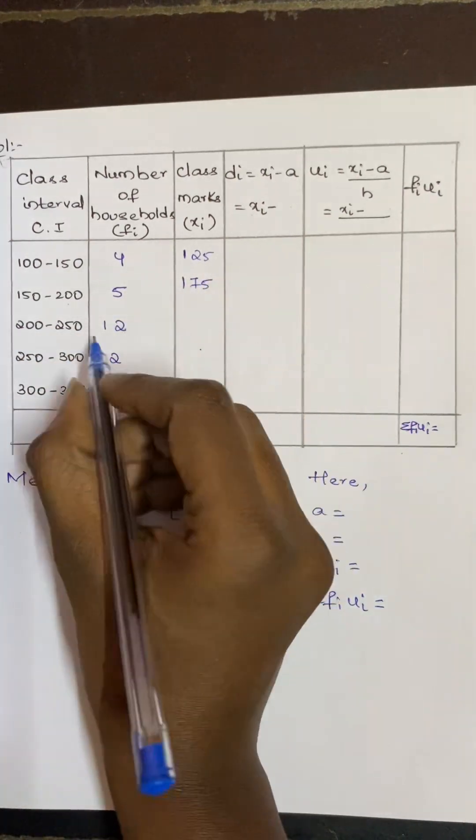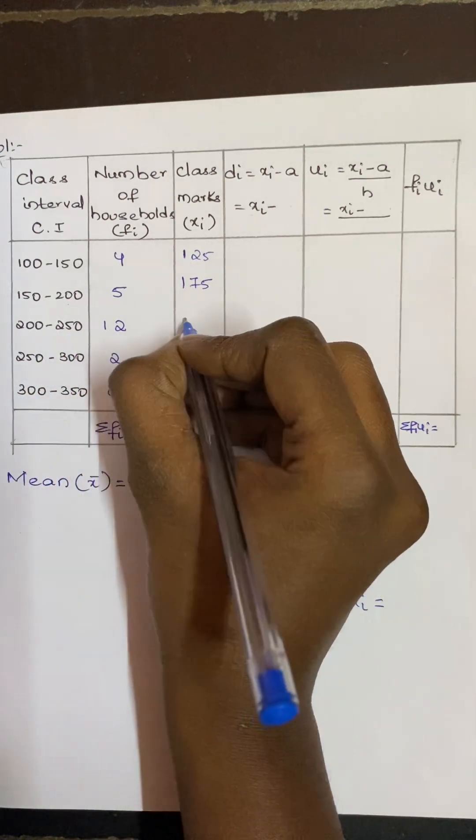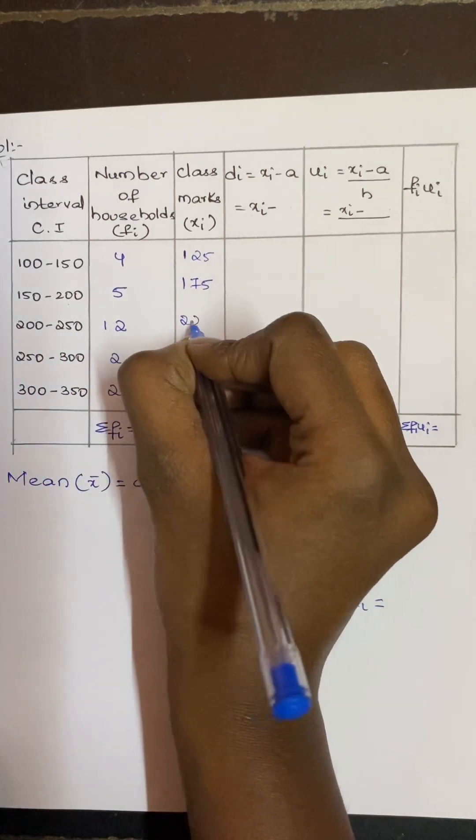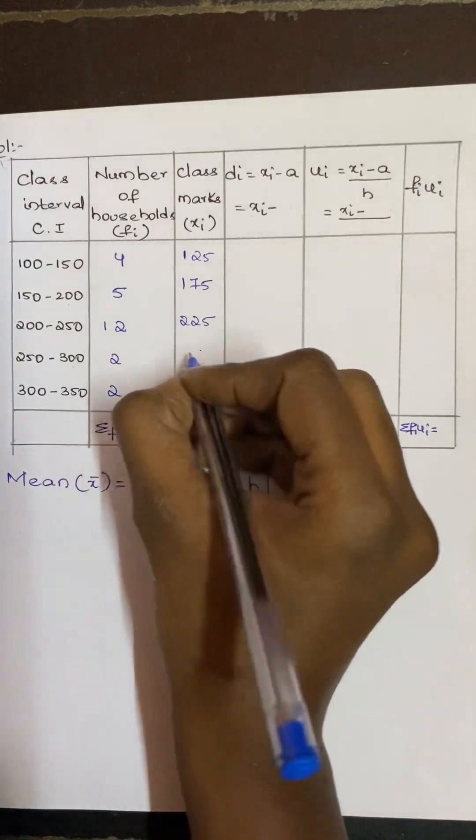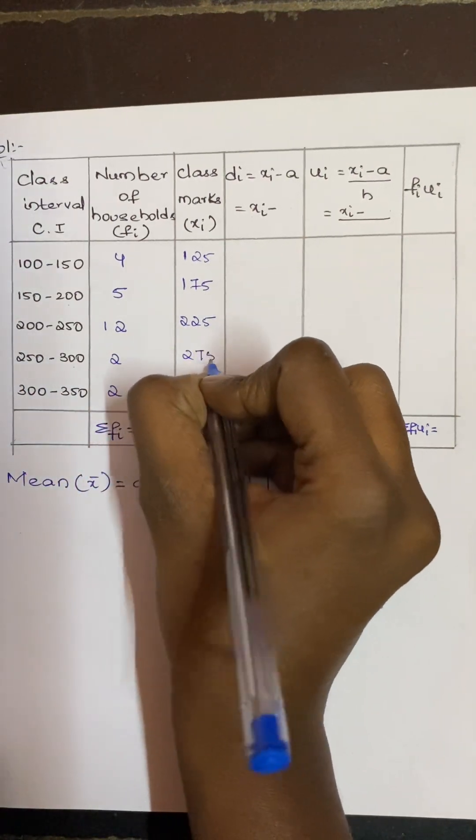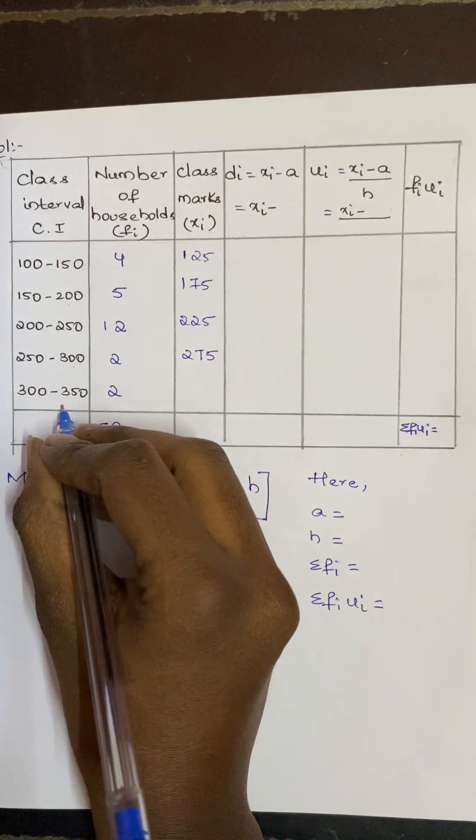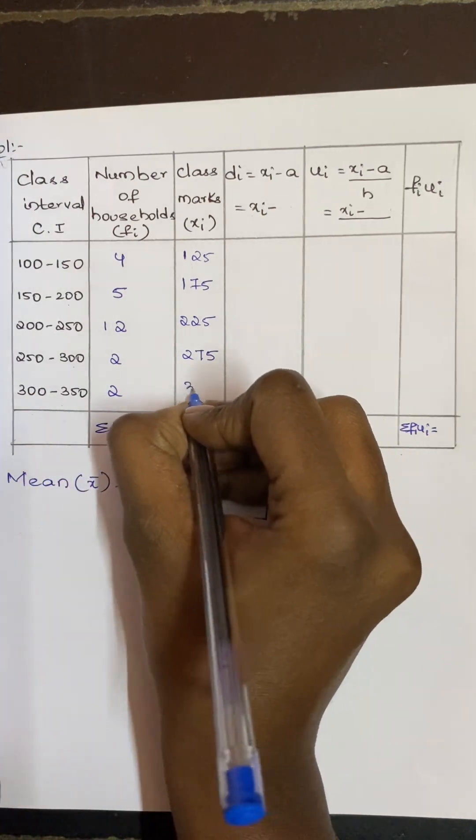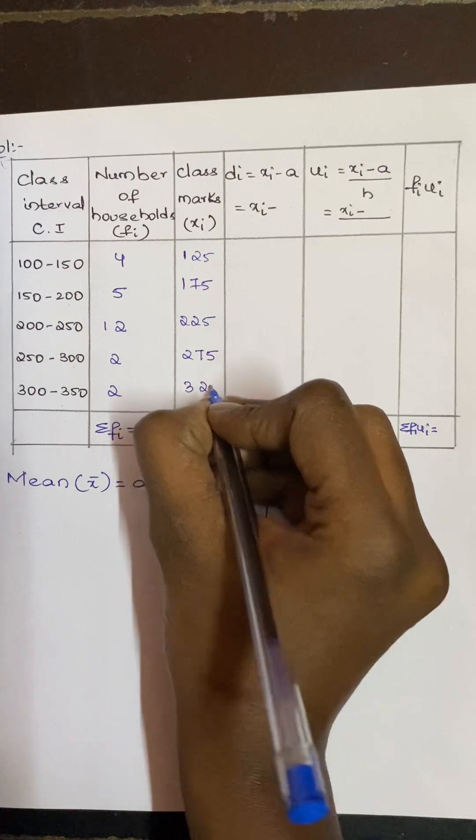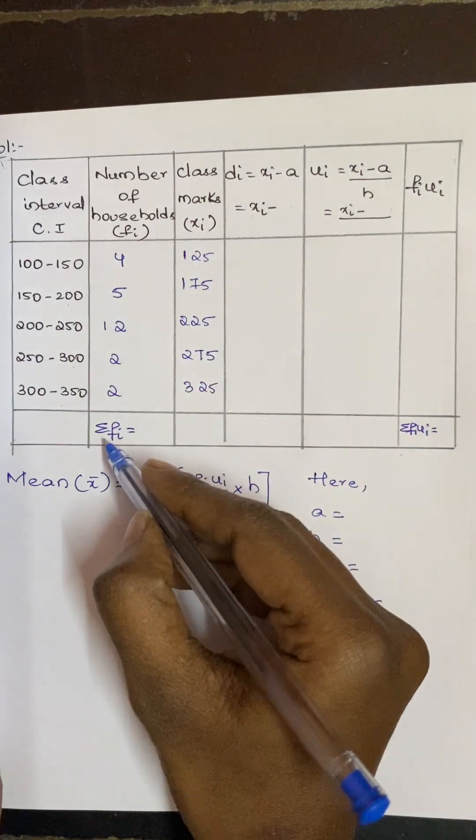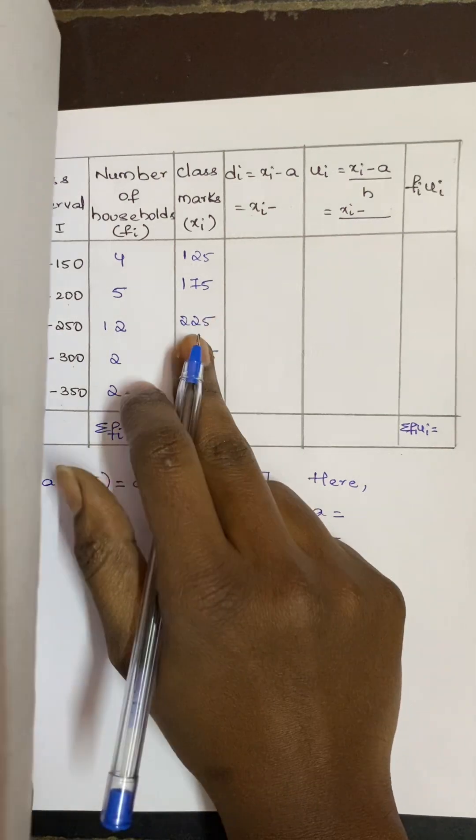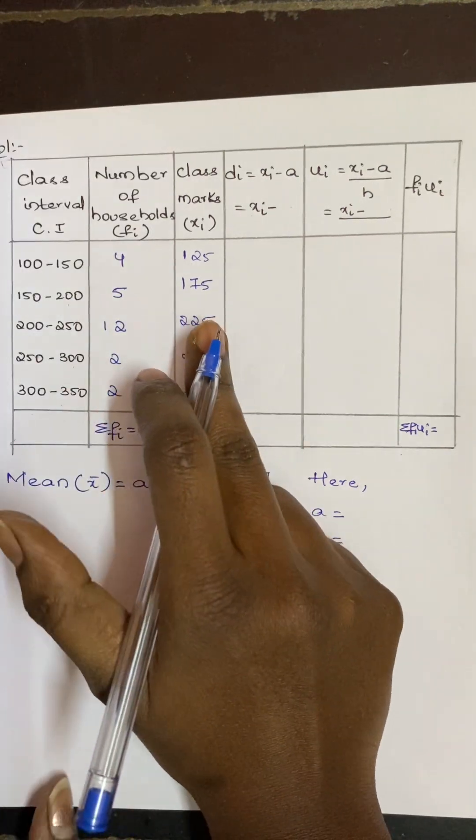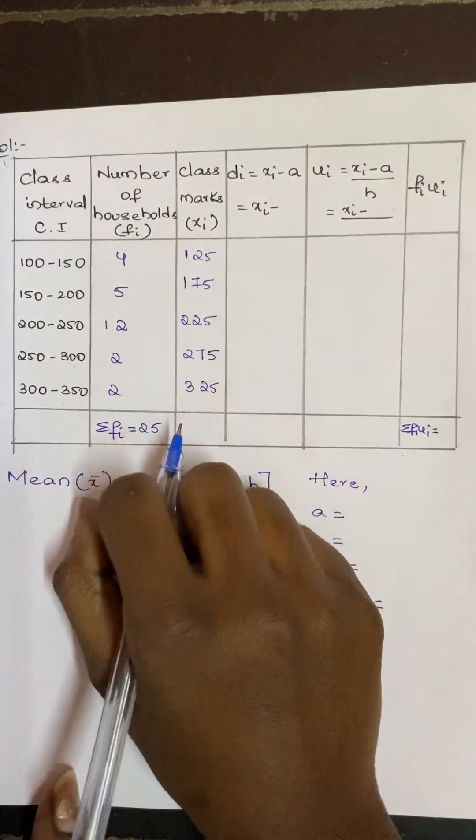Next, 200 plus 250 divided by 2 is 225. 250 plus 300 divided by 2 is 275. 300 plus 350 divided by 2 is 325. And adding all these fi values we get 25. Now next, how to find a value?